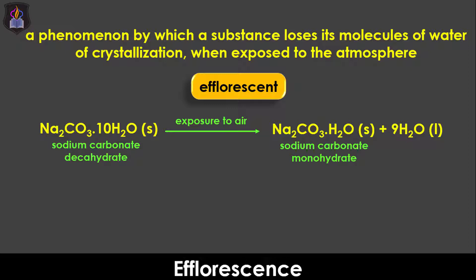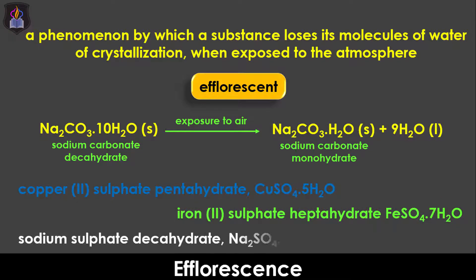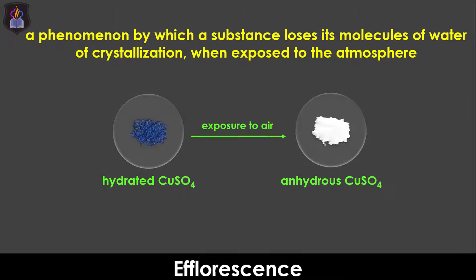Other examples of efflorescent substances are copper-2-sulfate pentahydrate, iron-2-sulfate heptahydrate, sodium sulfate decahydrate, etc. When substances undergo efflorescence, there will be a decrease in their masses since they lose their water of crystallization to the atmosphere. Also, they lose their crystalline nature and become amorphous or powdery.